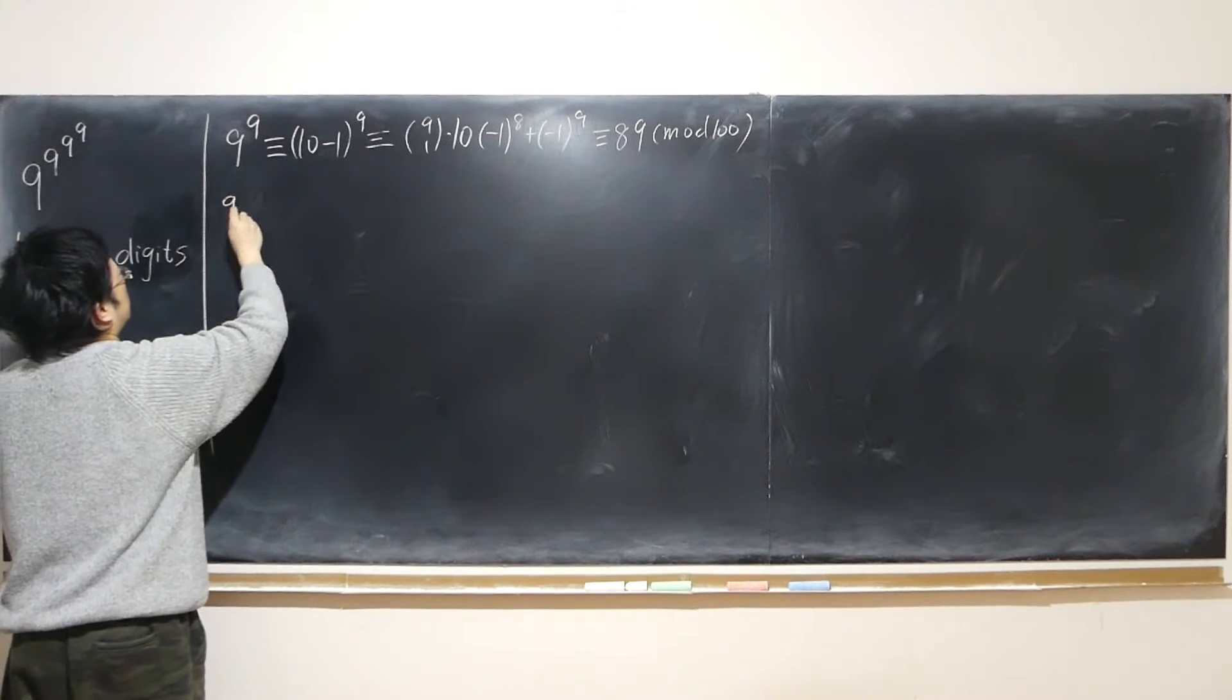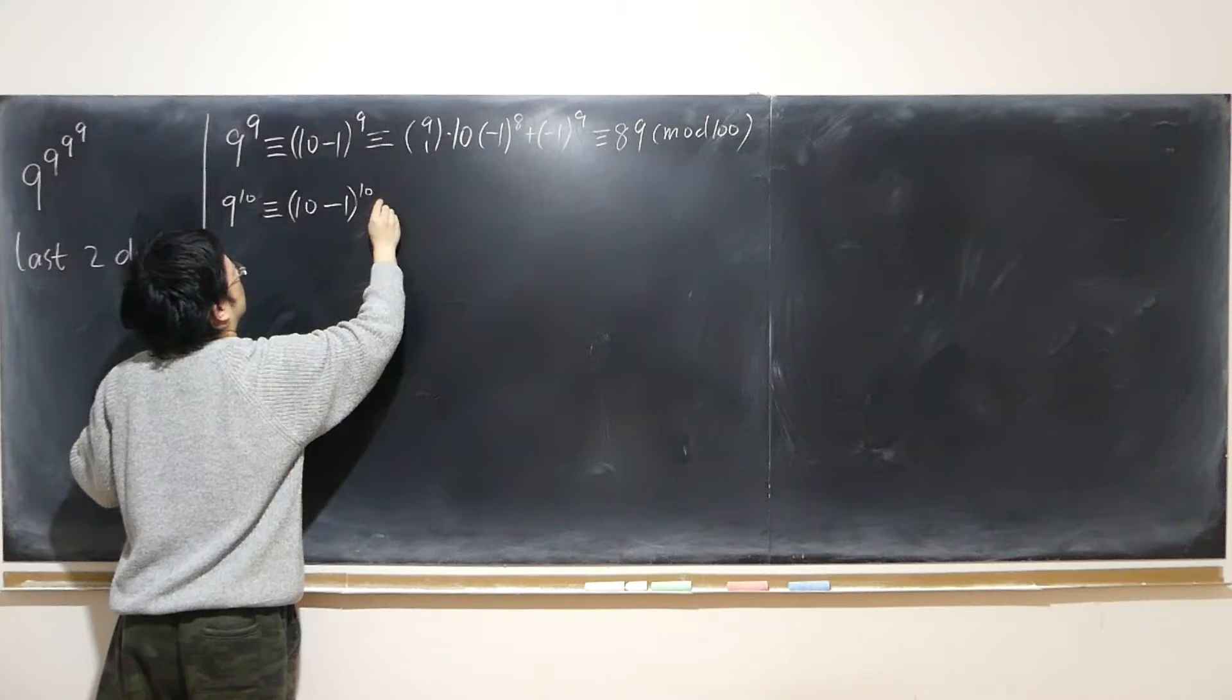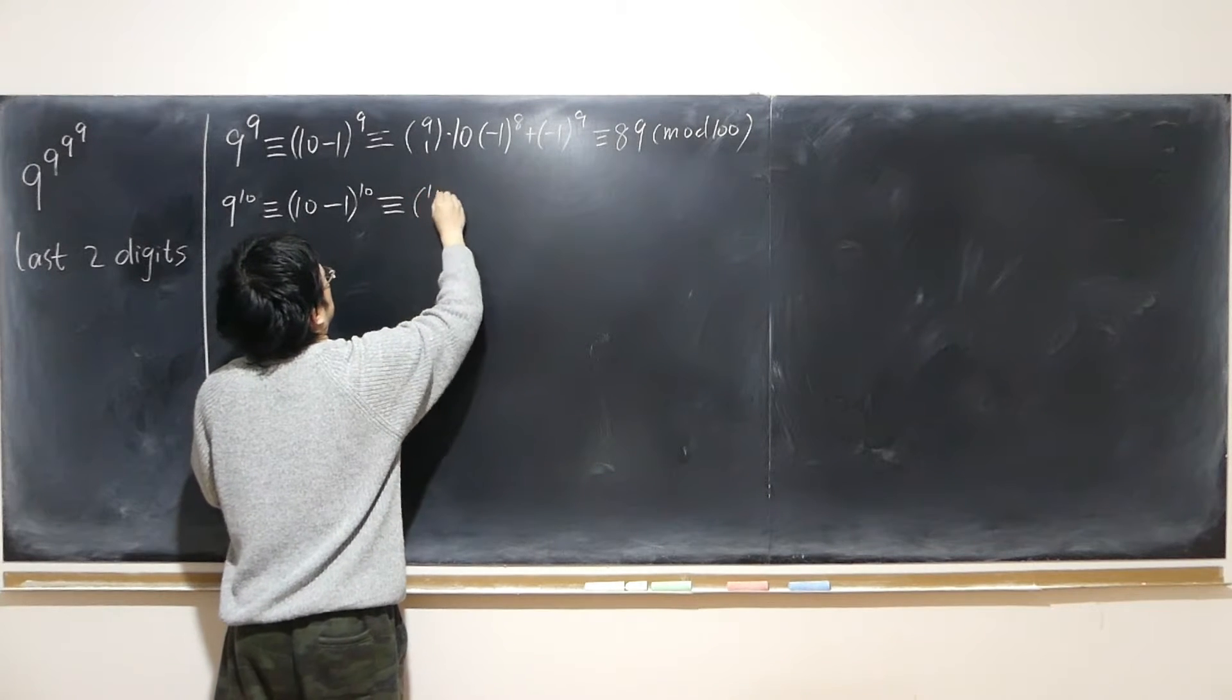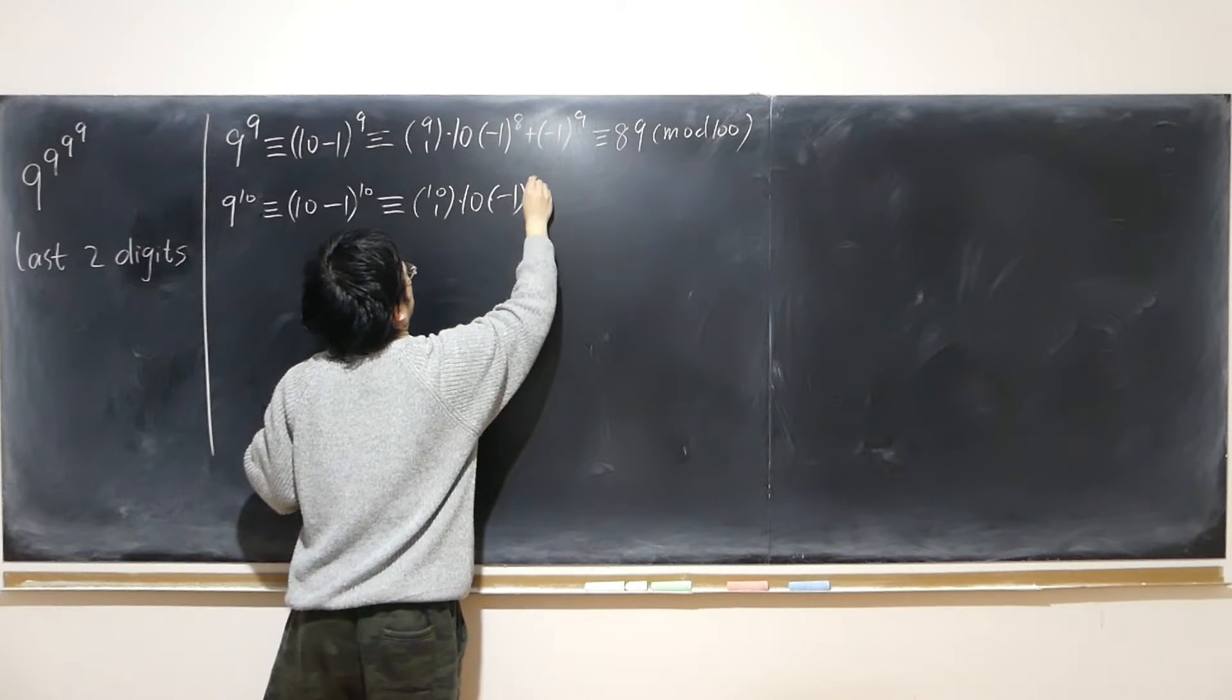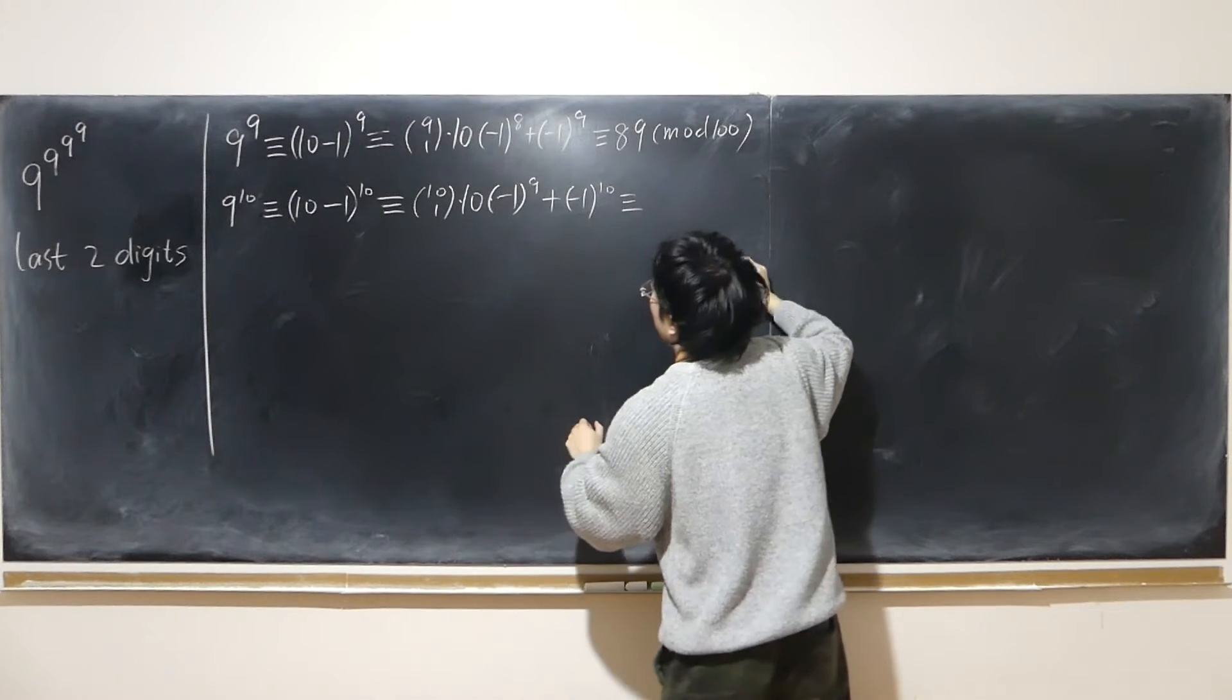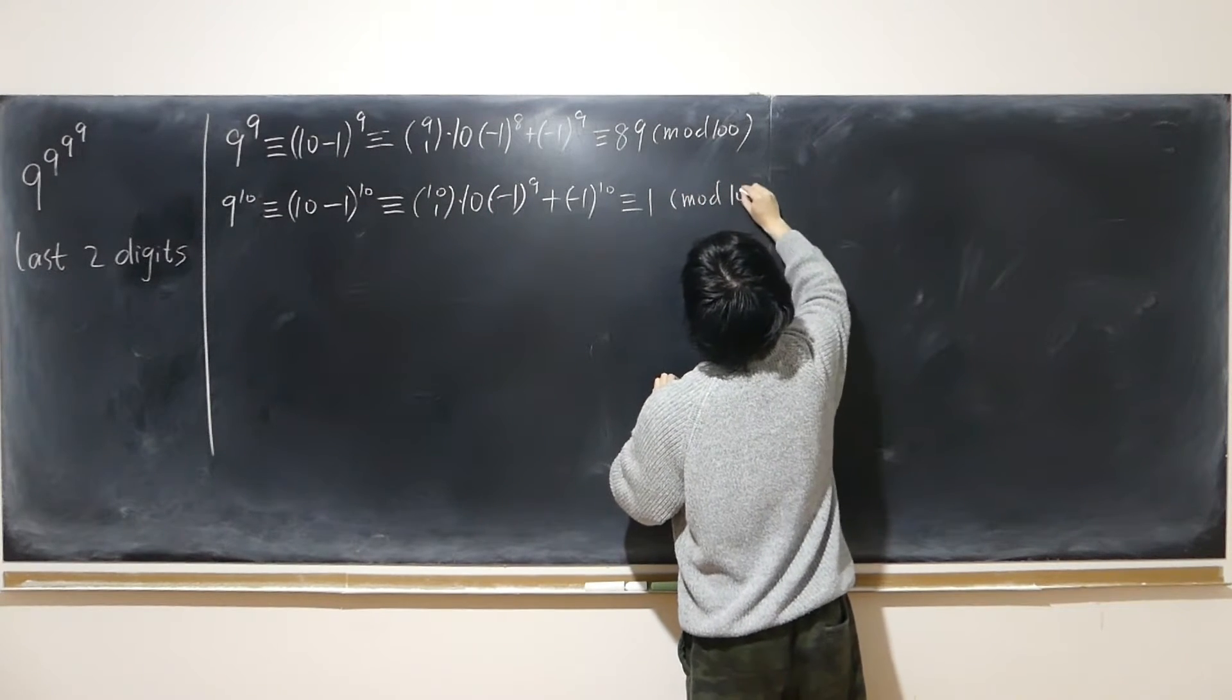Likewise, 9 to the power of 10 is congruent to (10-1) to the power of 10. So congruent to 1, same logic. Same logic as this one. 10 choose 1 times 10 times (-1) to the power of 9 plus (-1) to the power of 10. But this is also multiple of 100 so this can be ignored, so congruent to 1 mod 100.